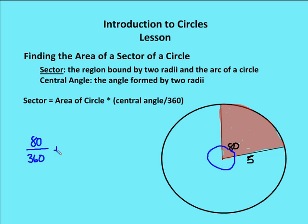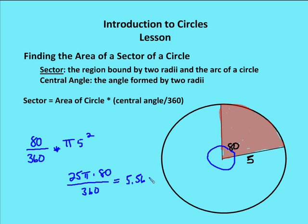Then you multiply that fraction by the entire area of the circle. For example, with a central angle of 80 degrees and a radius of 5, the fraction is 80 over 360. I multiply that by pi r squared — pi times 5 squared, which is 25 pi — times 80 divided by 360. That gives roughly 5.56 pi. In these cases, you can leave the answer in terms of pi, though sometimes I'll have you multiply the value by pi.